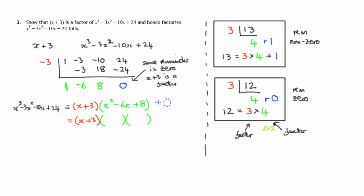The first two terms in these brackets would multiply to give you x squared. There's not a lot of choice there. That's x times x. And 8 is 4 times 2, 2 times 4. So let's put a 2, let's put a 4.